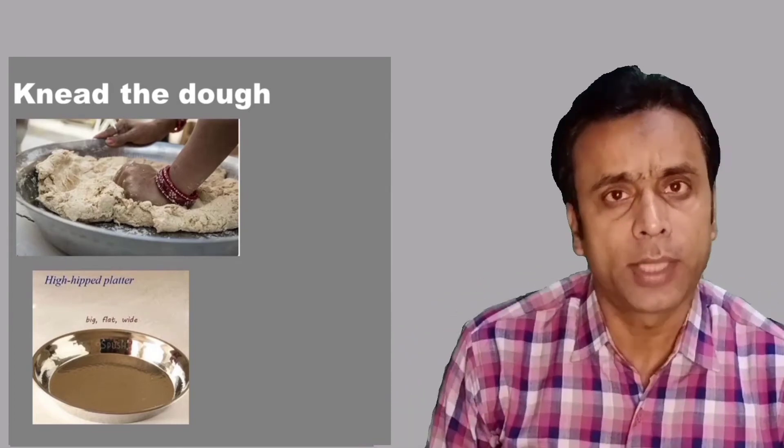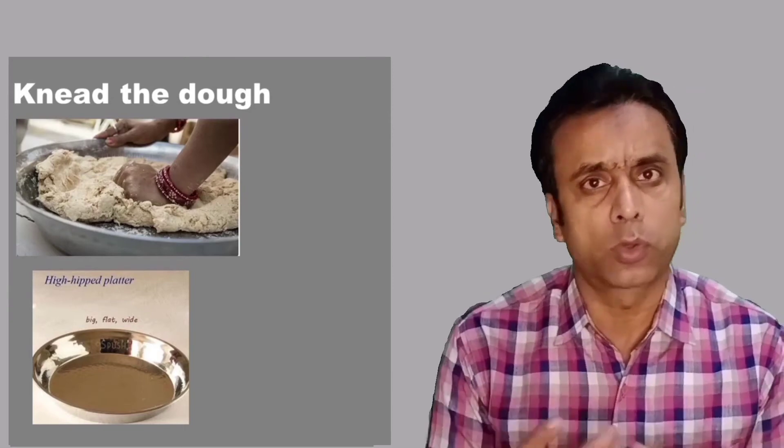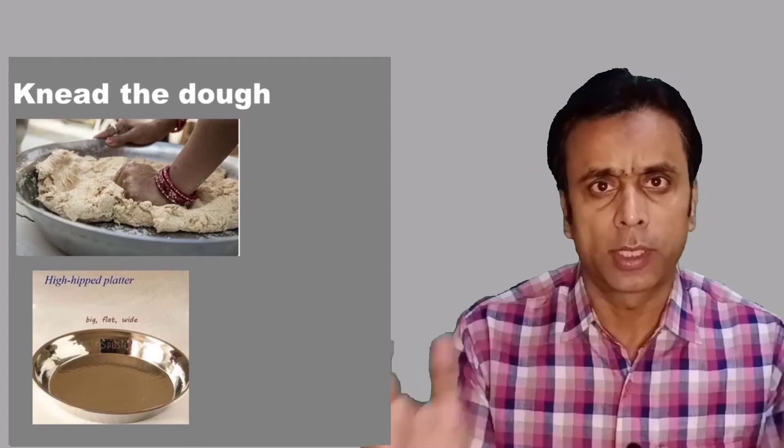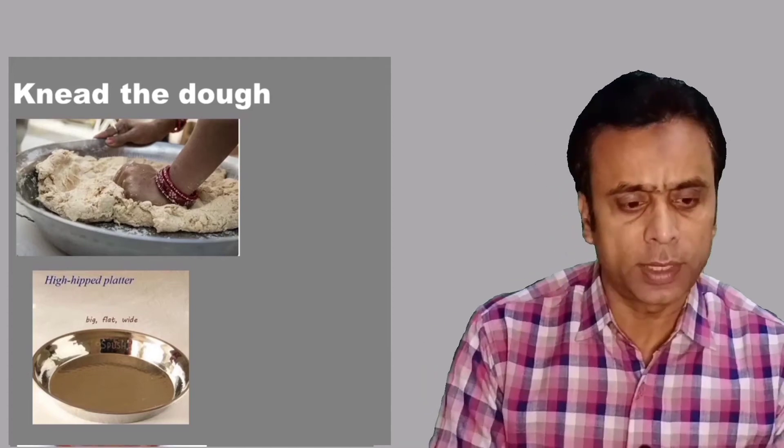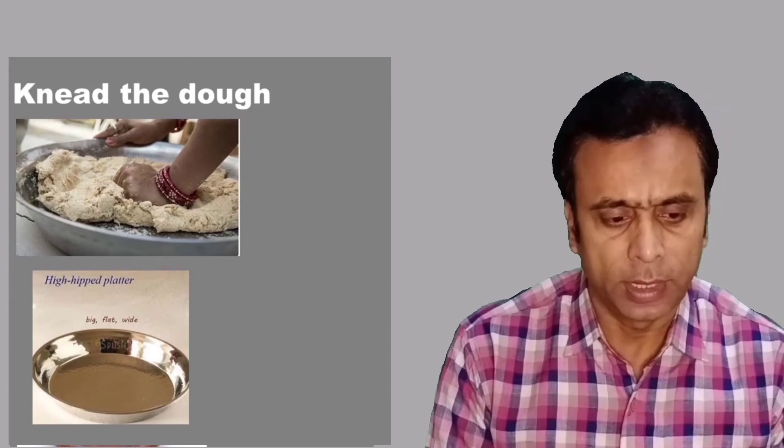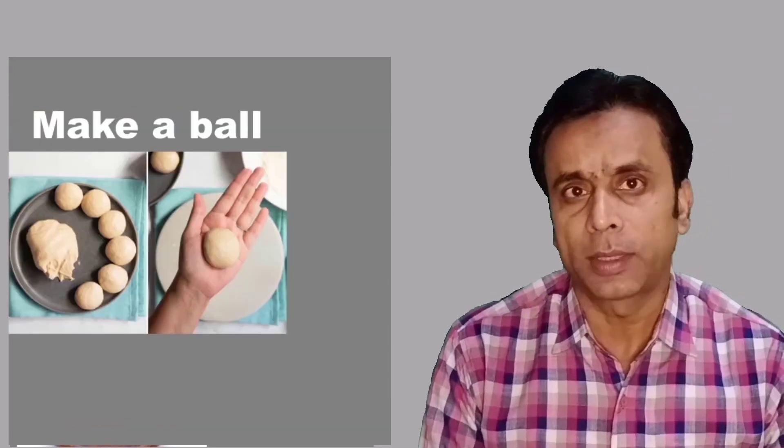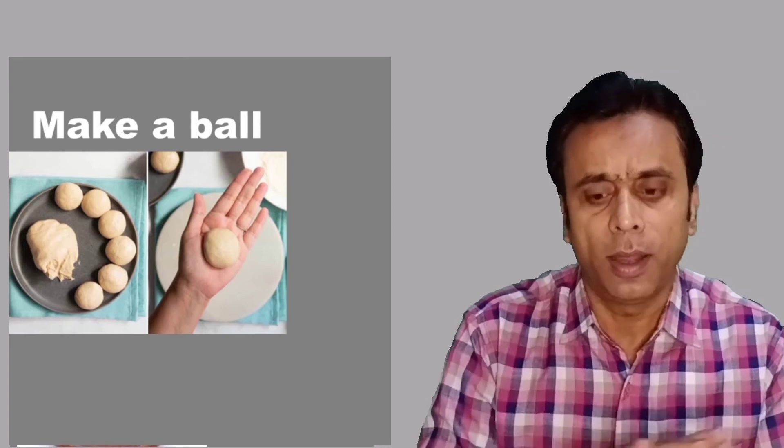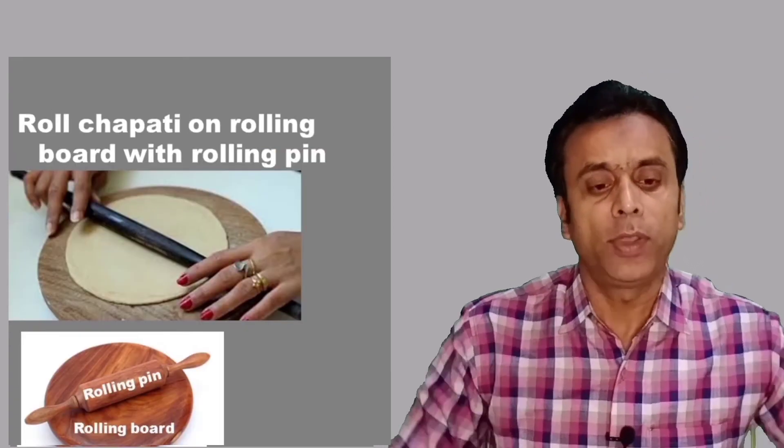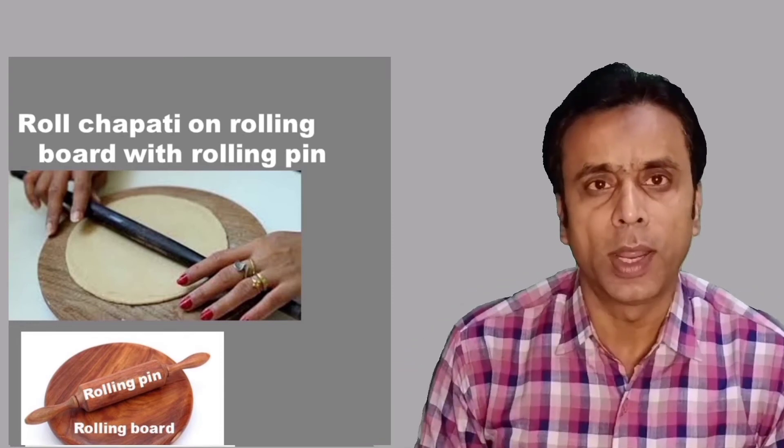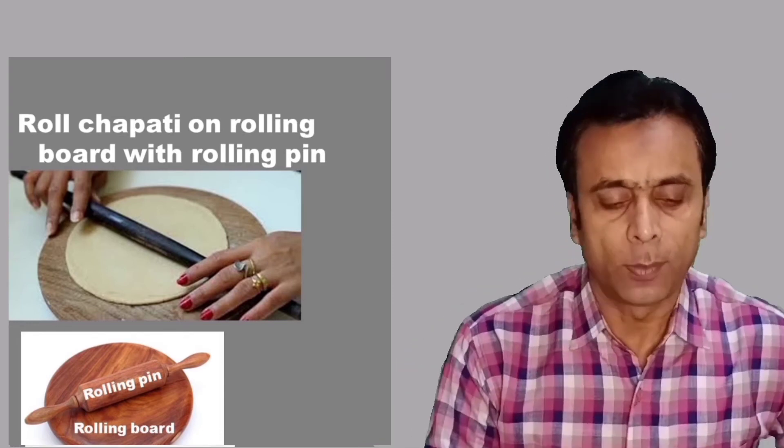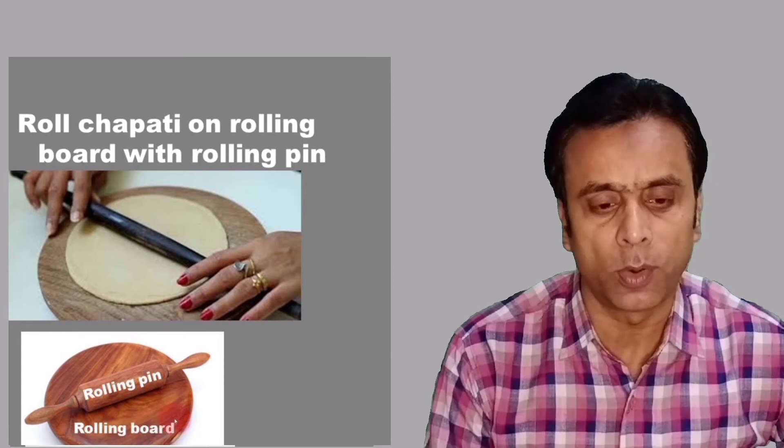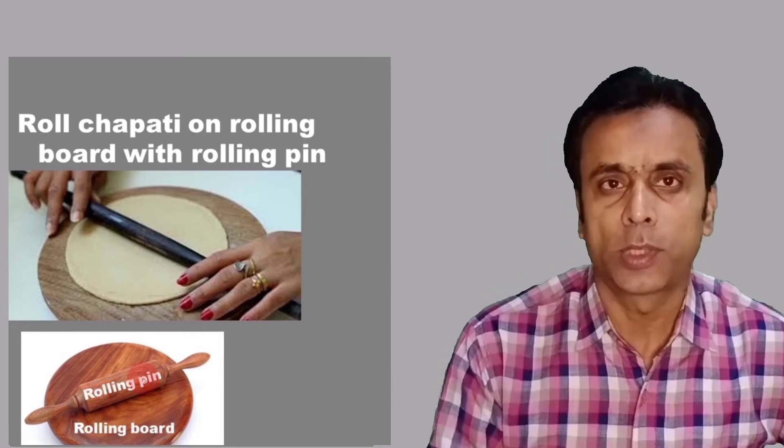Then we knead the dough. When it is dry, we call it flour, but when you add water and it becomes solid, that's called dough. So knead the dough in a high-lipped platter. Then we make balls, make small portions to roll. That's called make a ball. After that, we roll chapati on our rolling board with rolling pin. The chakla, as you can see here, we call it rolling board. And the rolling pin, that's what we call rolling pin.